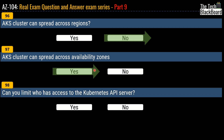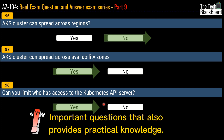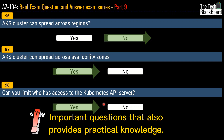Question 98: can you limit who accesses the Kubernetes API server? The correct answer is yes — you can limit access to the Kubernetes API server. These are quick but important questions useful not only from an exam perspective but also in real-world work with Azure Kubernetes, which is a very hot topic across the entire industry.